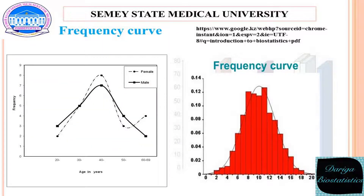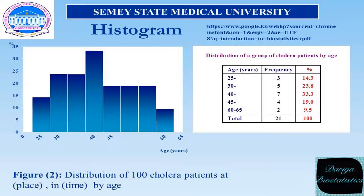A frequency curve can also be drawn with the help of a histogram by joining the midpoints of rectangles. A histogram is a set of rectangles whose areas are in proportion to class frequencies. It is a graph in which frequencies are represented by bars. The histogram appears as a series of bar graphs placed one next to the other in a vertical way. In this example, the figure shows the distribution of 100 patients by height.